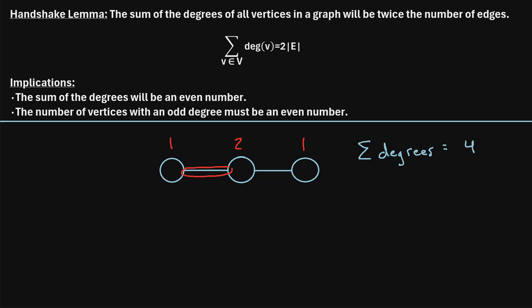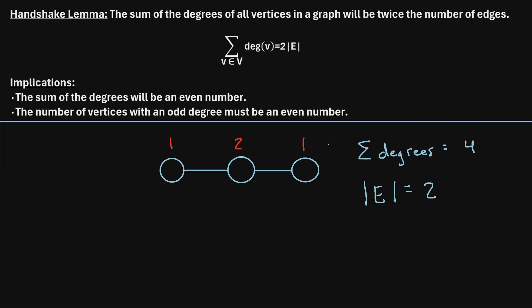This graph has two edges. So the number of edges is two. We can see that the sum of the degrees of all the vertices — four — is indeed twice the number of edges, just as the handshake lemma says it should be. Both implications are also true: the sum of the degrees is an even number (four), and the number of vertices with an odd degree is also even. We have two vertices with an odd degree of one each, and two is an even number. If you have a vertex with an odd degree, there must be another vertex with an odd degree so they can pair up to form an even number.